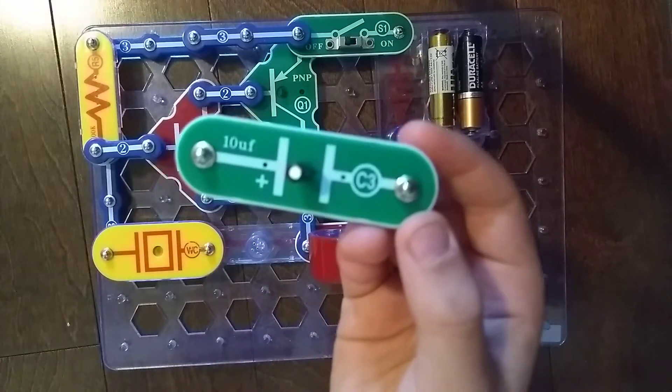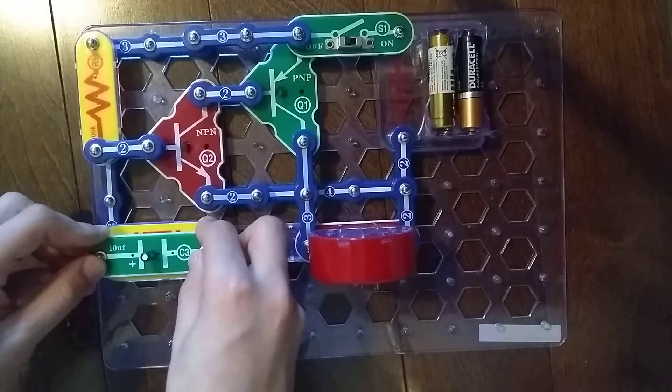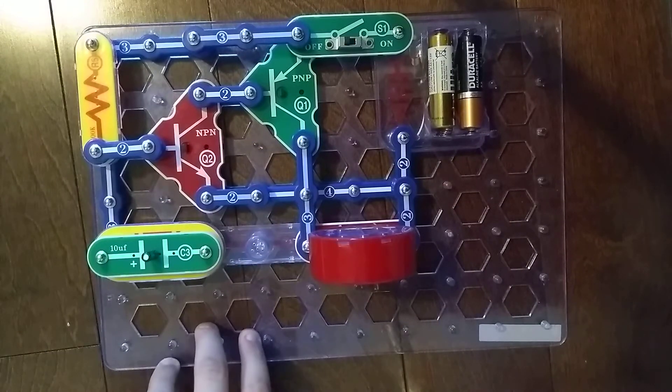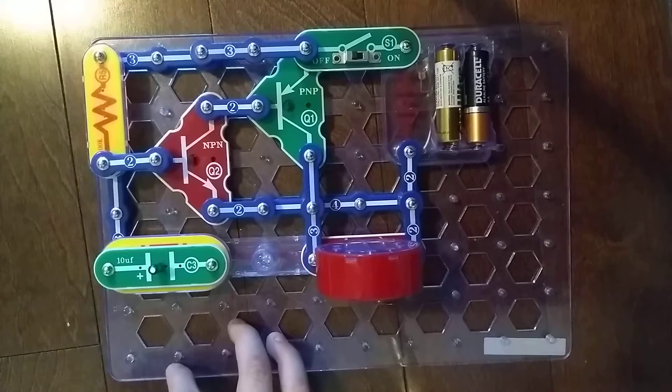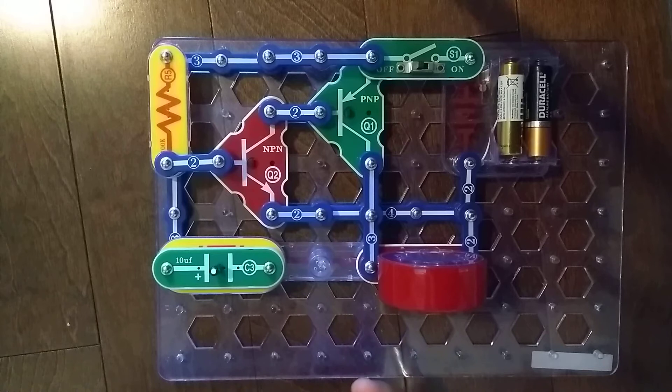So I'm supposed to place the C3 capacitor right above the whistle chip WC. I'm actually not sure what's supposed to happen. This is the advanced troubleshooting project.